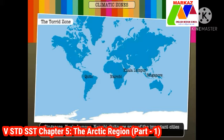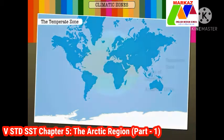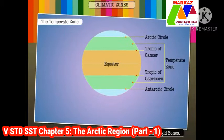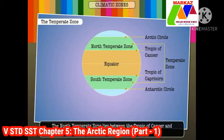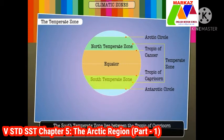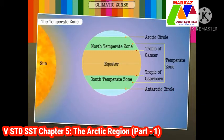Singapore, Kuala Lumpur, Nairobi, and Quito are some of the important cities in the torrid zone. The temperate zone is located between the tropical and the frigid zones. There are two temperate zones: the north temperate zone, which lies between the Tropic of Cancer and the Arctic Circle, and the south temperate zone, which lies between the Tropic of Capricorn and the Antarctic Circle.